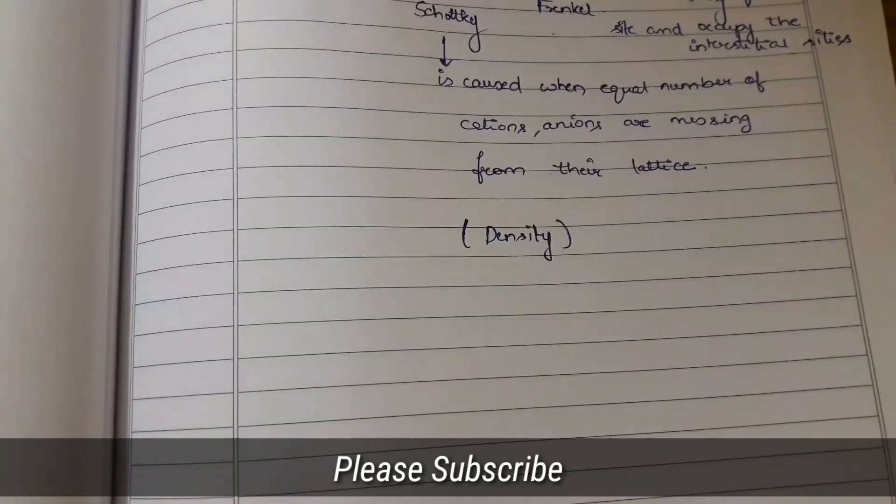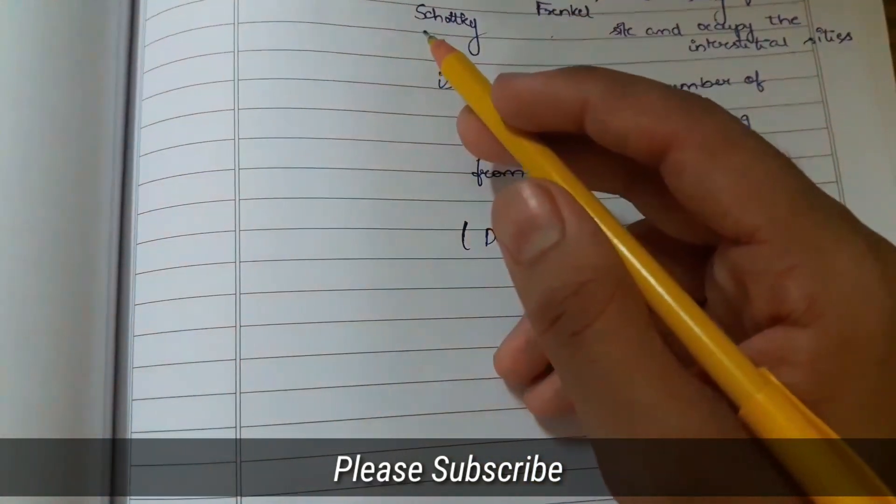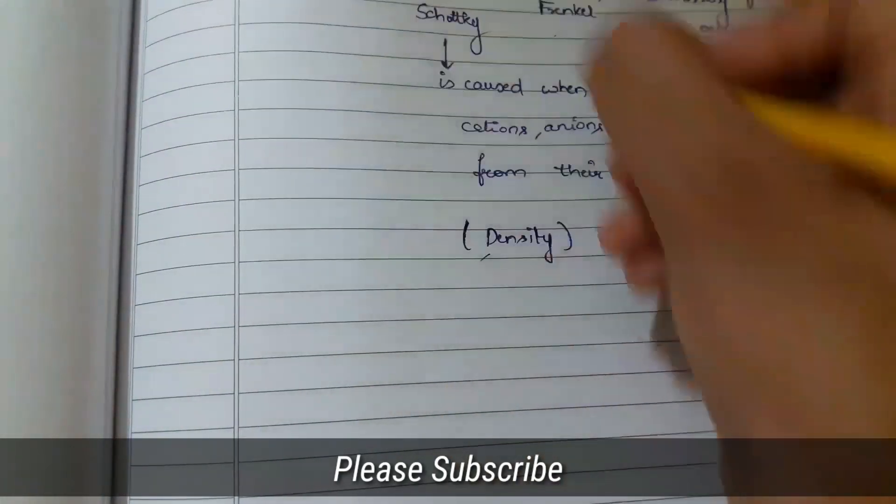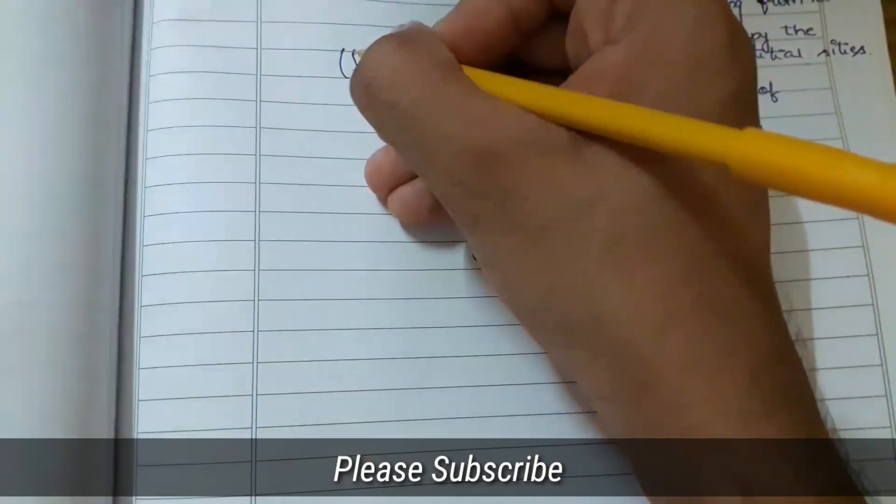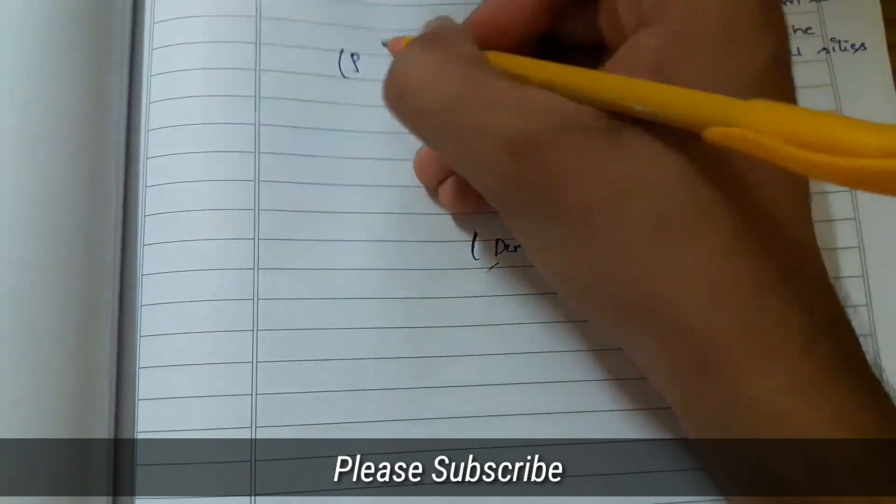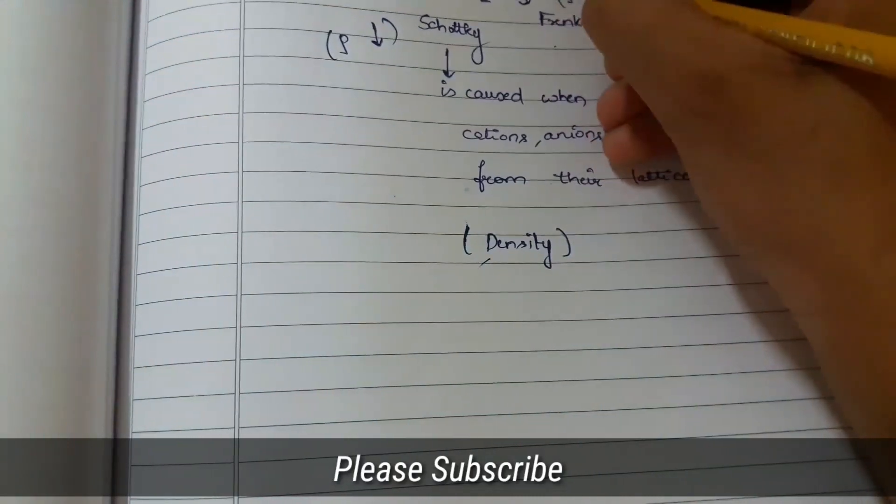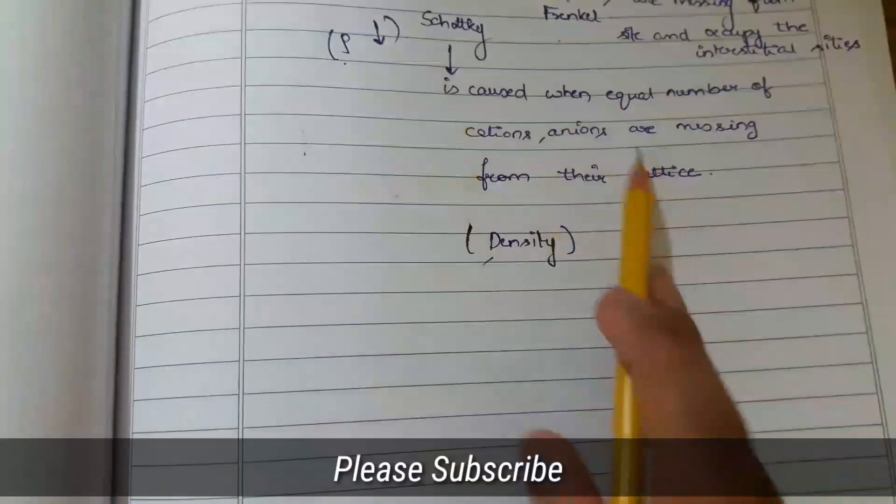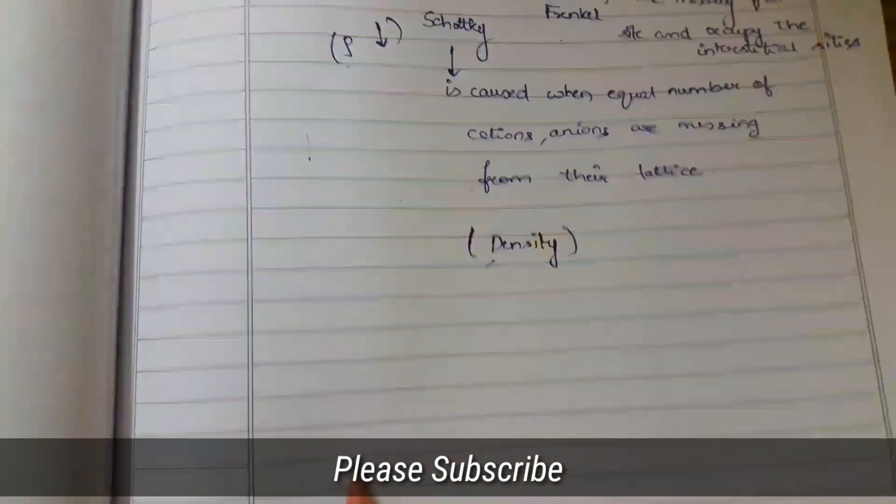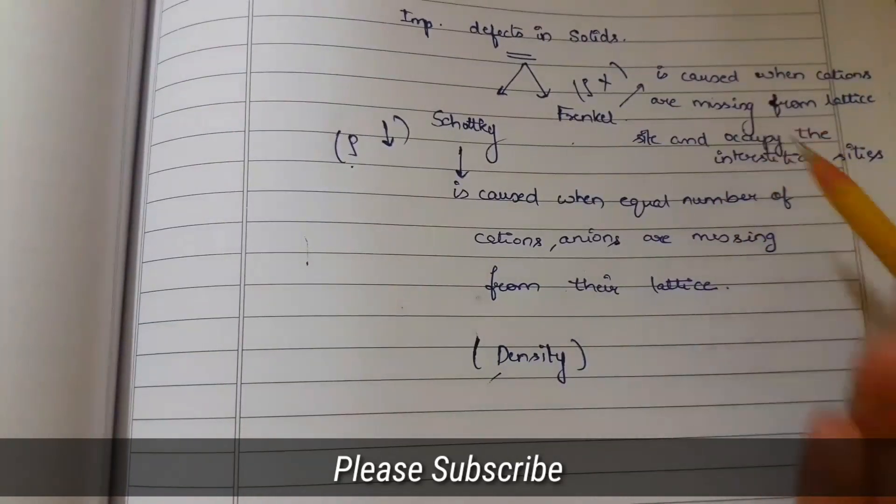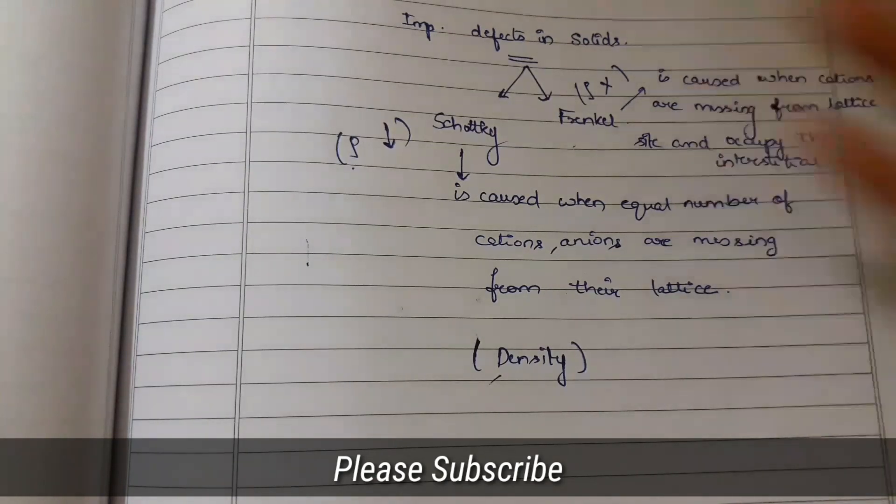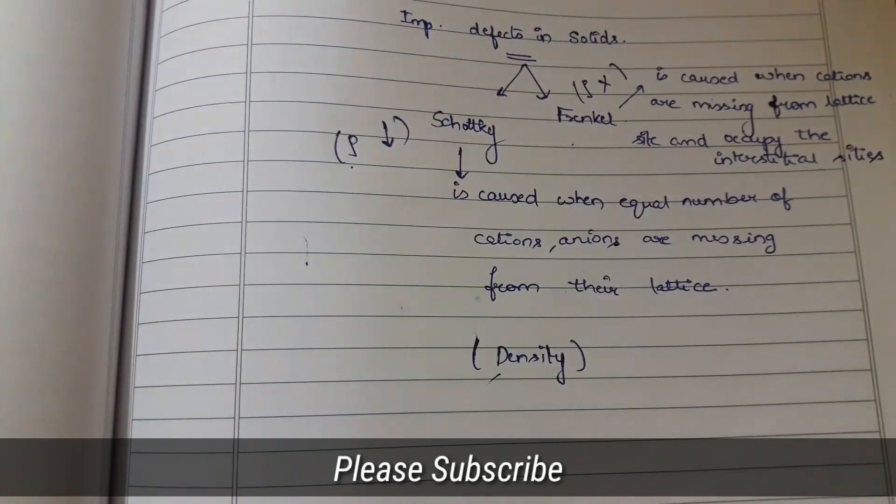In Short Key Defects, density is decreased. In Frankel Defects, density does not change. Why? Here equal number of cations and anions are missing totally from the lattice, so there is decrease in density.